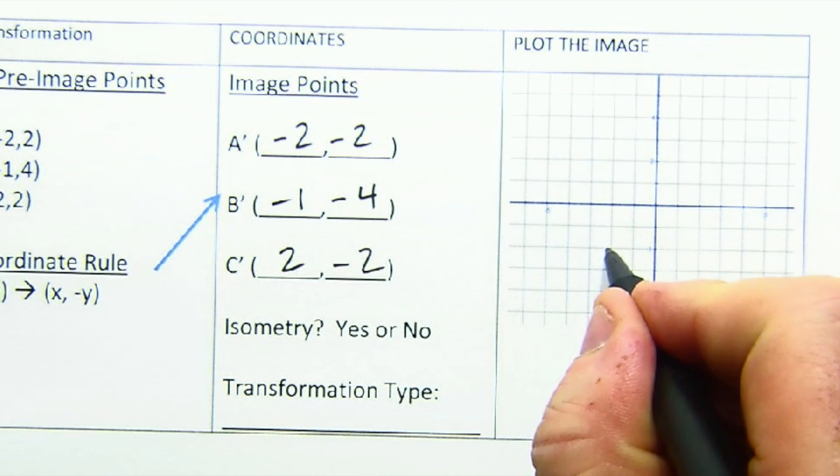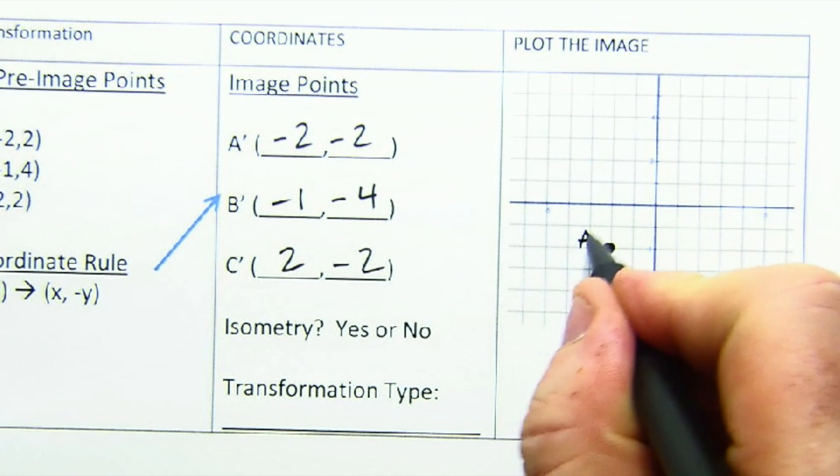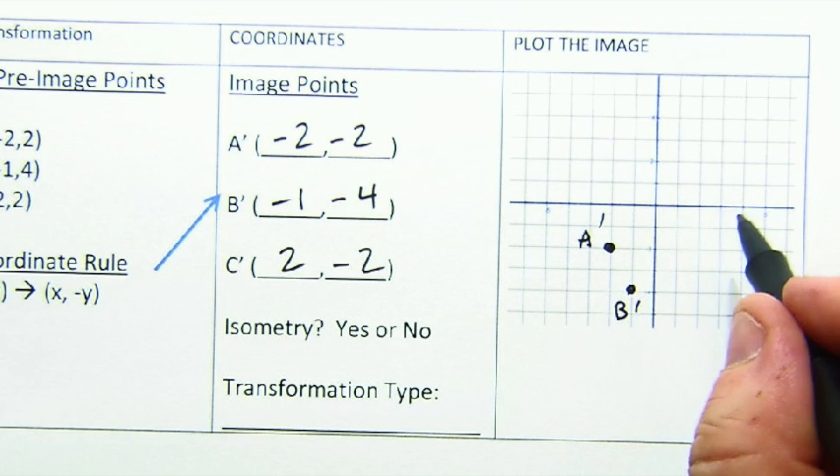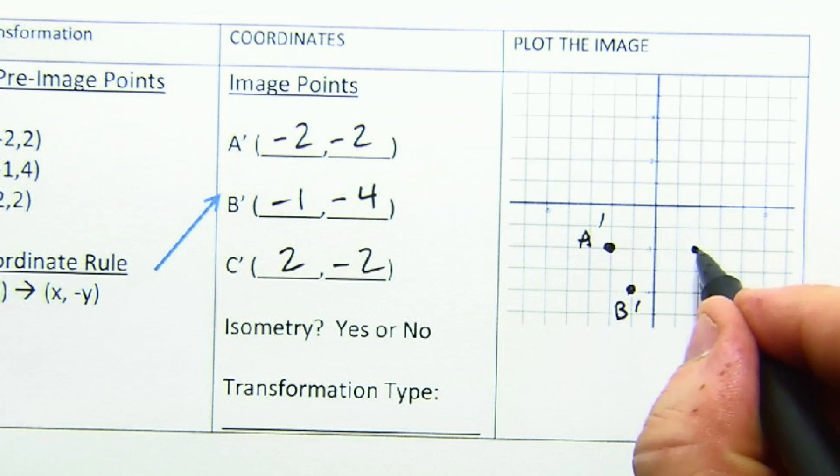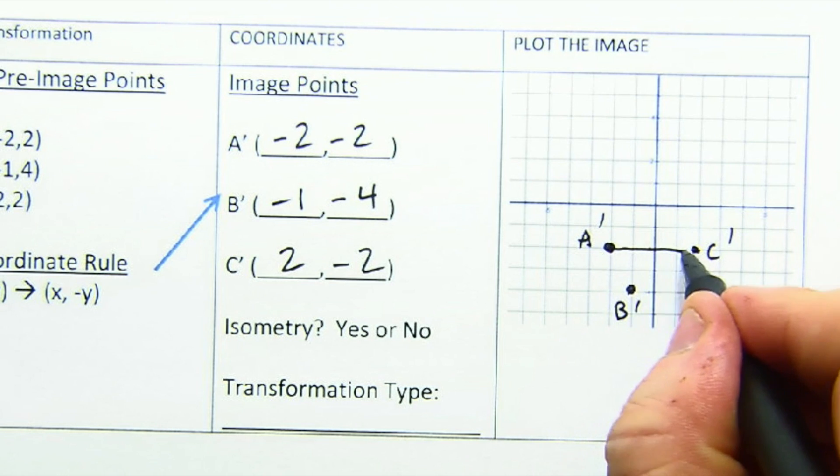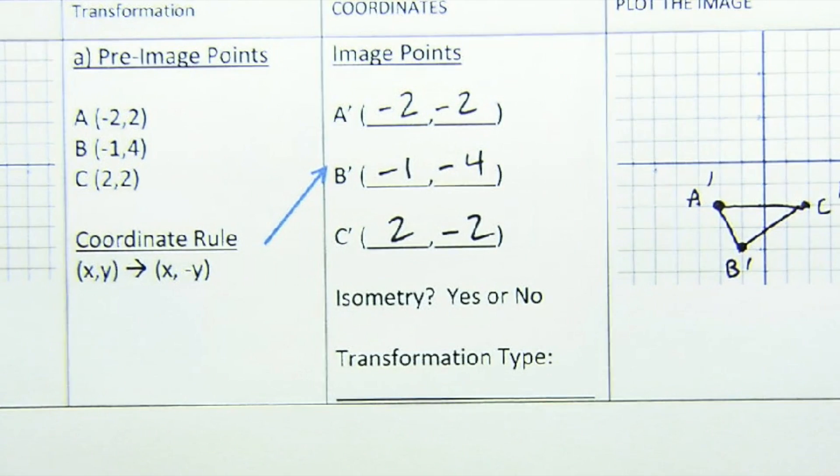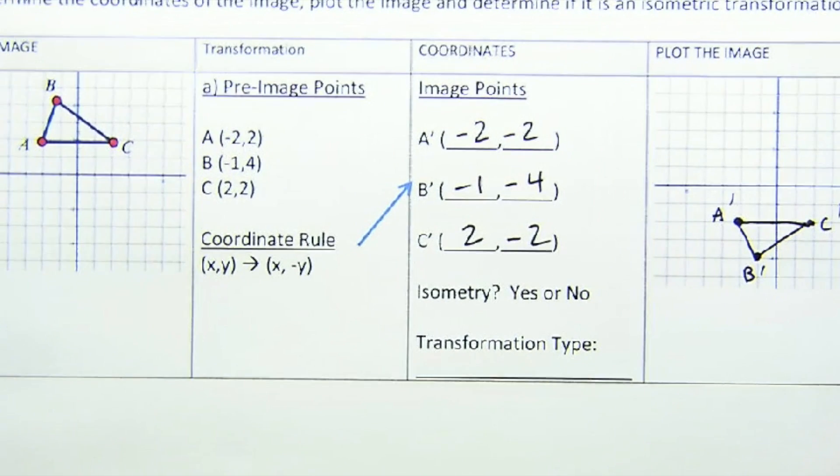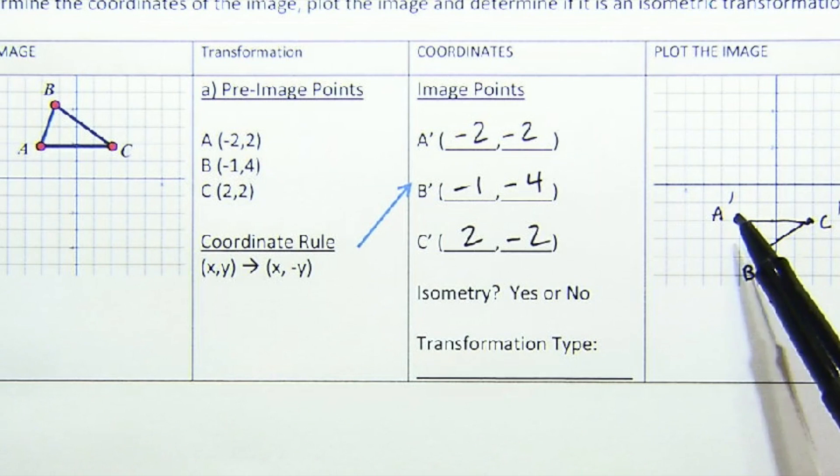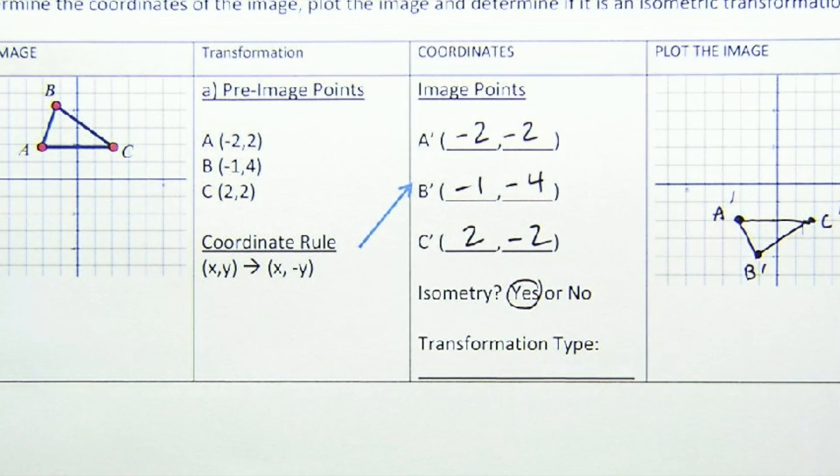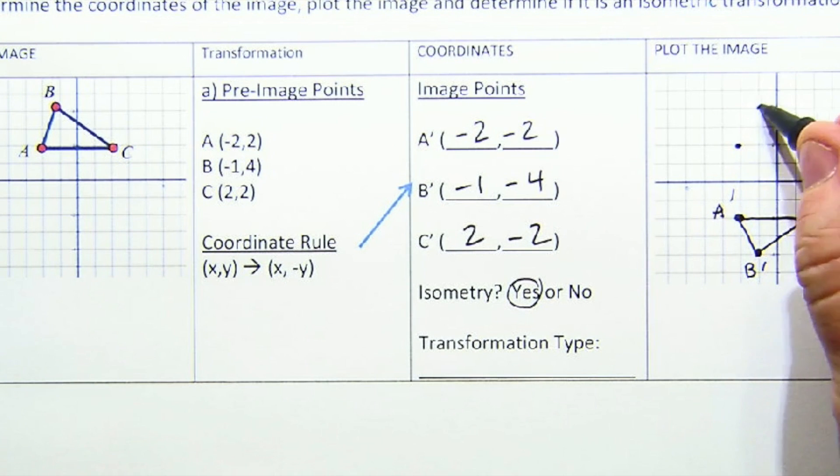Negative 2, 2 is A prime. Negative 1, 4 is B prime. And 2 and negative 2 is C prime. If I connect these, I find myself looking at the same triangle, right? The distances all match up. This is a distance of 4 across here, same rise and run and so on here, and so they are isometric, yes. And if I look at the original, maybe I'll quickly plot the original here.